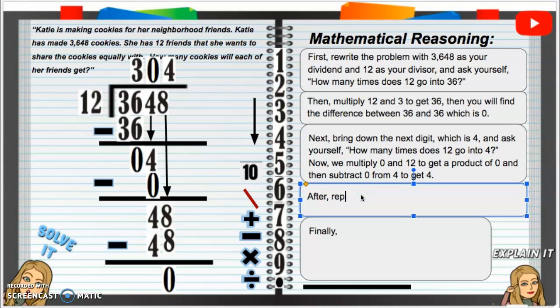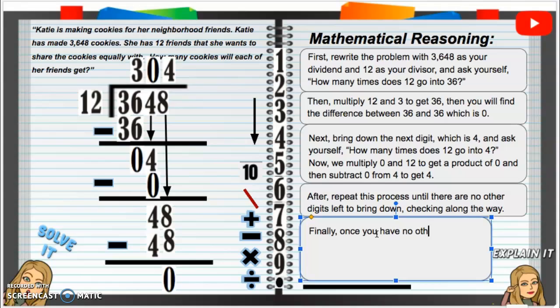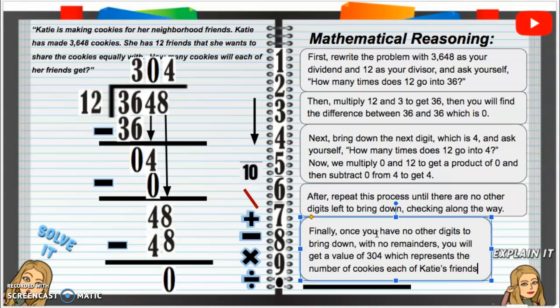After, we have to repeat this process until there are no other digits left to bring down, checking along the way, of course. Finally, once you have no other digits to bring down with no remainders, you will get a value of 304, which represents the number of cookies each of Katie's friends will get.